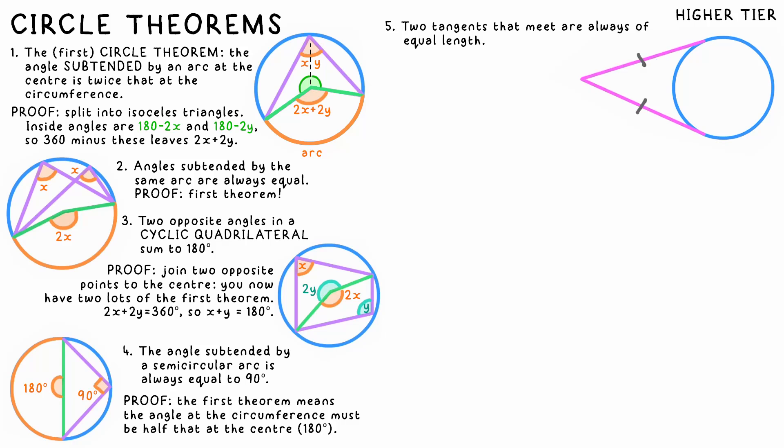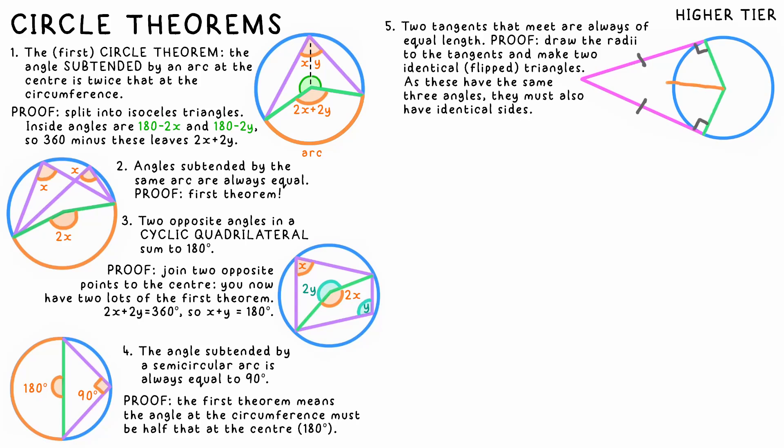When two tangents are drawn from points on the circumference to the place where they meet, they must be equal in length. This one might seem a bit more obvious, but we still need to be able to prove it. This is true because if we draw the two radii, they must be perpendicular to the tangents, and the angles within the two triangles must also be equal, so the lengths of the sides are too.